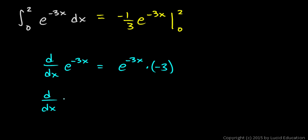So watch this. The derivative of negative 1 third e to the negative 3x will be negative 1 third, because a constant multiplier stays out front, times the derivative of e to the negative 3x, which is e to the negative 3x times negative 3 by the chain rule.